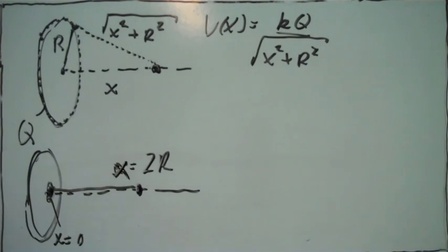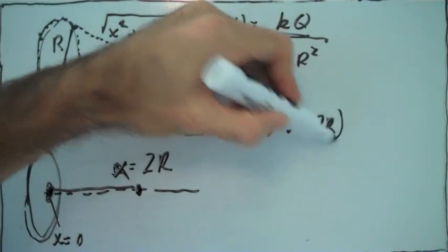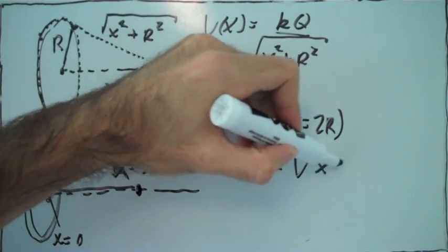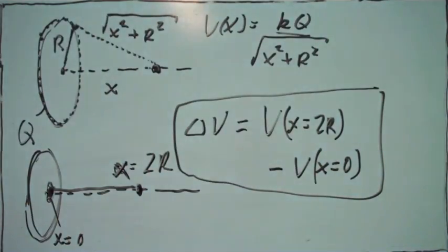We just have to evaluate this function at x equals 2r and at x equals 0 and subtract those numbers. So all we have to do is plug into the function that we have for potential as a function of x, we plug in 2r and 0.